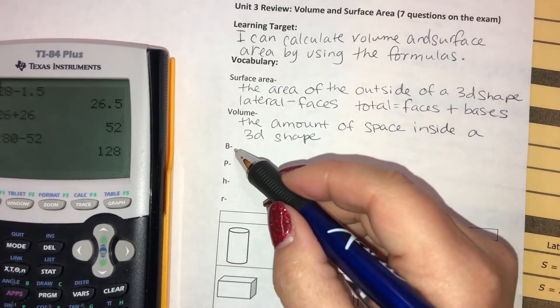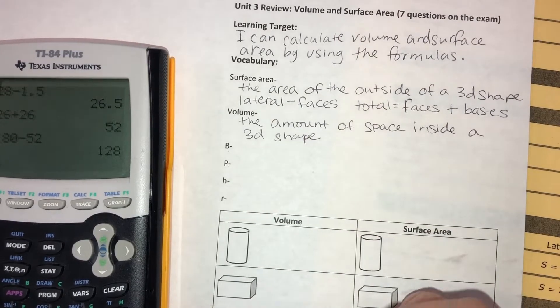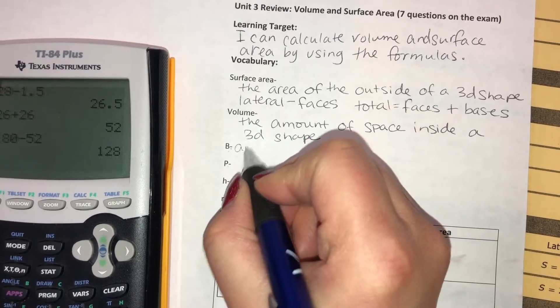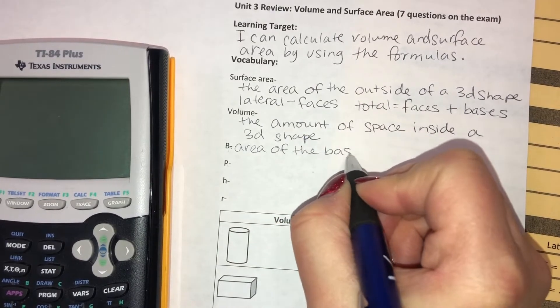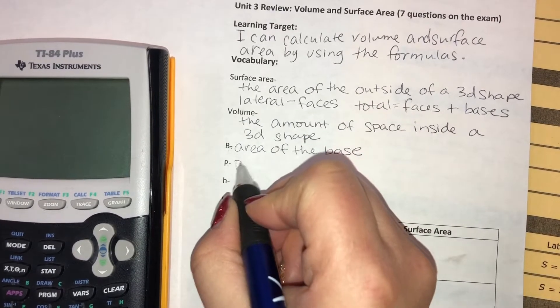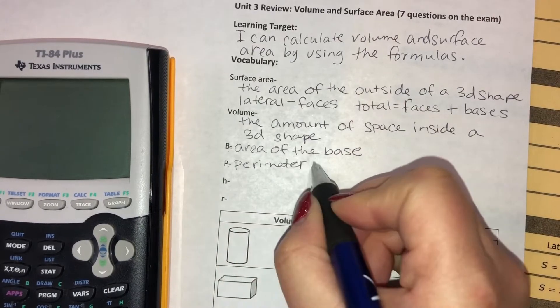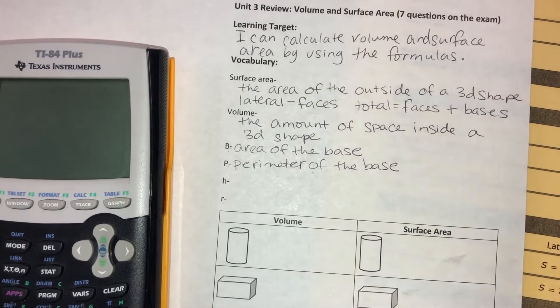When you get to the formulas, there's some things you need to remember. When you have a capital letter, that means it's something you have to calculate. It's not just a number. The capital B means area of the base, and the capital P means perimeter of the base. Those things change depending on what the base is.